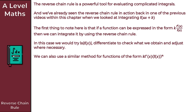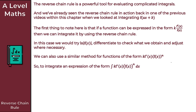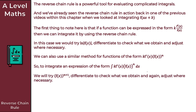We can also use a similar method for functions of the form k times f prime of x times f of x to the power of n. To integrate an expression of this form — the integral of k f prime of x times f of x to the power of n with respect to x — we try f of x to the power of n plus 1. We'd differentiate to check what we obtain and adjust where necessary.